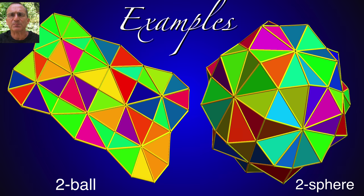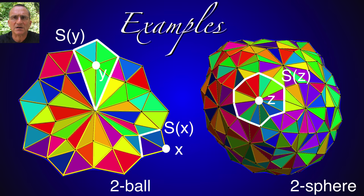So here are simple examples. See to the left a two ball and the triangulation of a two-dimensional disc and a two sphere to the right, the triangulation of a two-dimensional Euclidean sphere. Note however that we never refer to Euclidean space when defining the graphs.